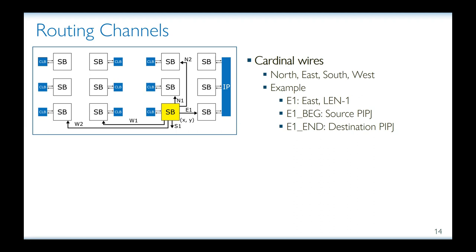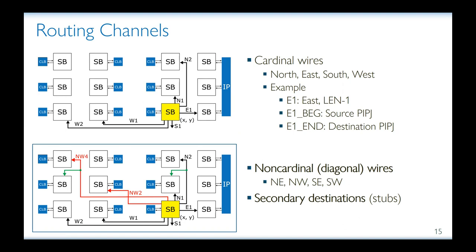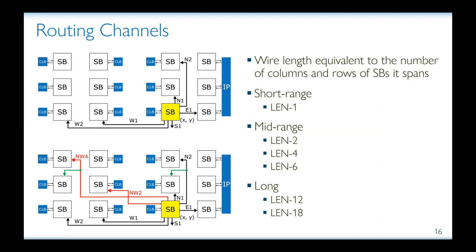As it turns out, not all wires are cardinal. There are also non-cardinal or diagonal wires. More interestingly, some wires have a secondary destination, which we mark here as a short green stub. The wire length of both cardinal and non-cardinal wires is equivalent to the total number of rows and columns of the switch boxes that they span. For our analysis, we cluster the wires into three sets based on their wire length: short range being wires of length one, mid range being wires of length two, four and six, and long wires being those of length 12 and 18.